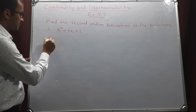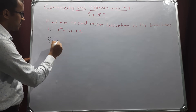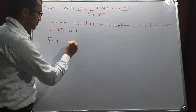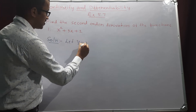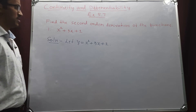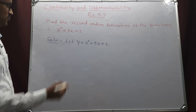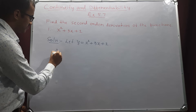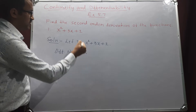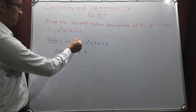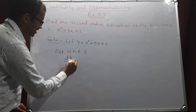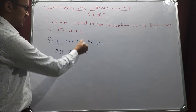First question: x squared plus 3x plus 2. Let us take the given function as y. So, let y equals x squared plus 3x plus 2. Then, differentiating with respect to x, dy by dx equals the differentiation of x squared.